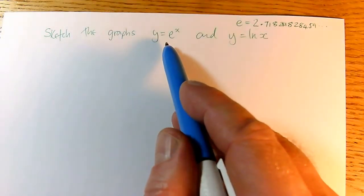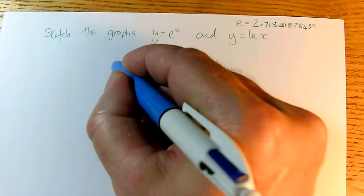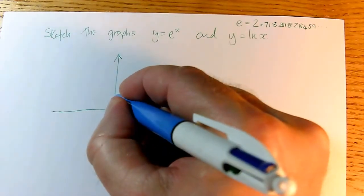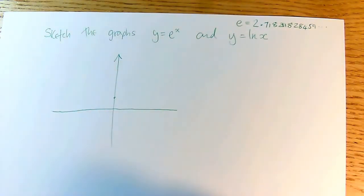And just like 2 to the x, e to the power of 0, anything to the power of 0 is 1. So on the graph of e to the x, it's going to go through 0, 1 because when x is 0, y is 1.